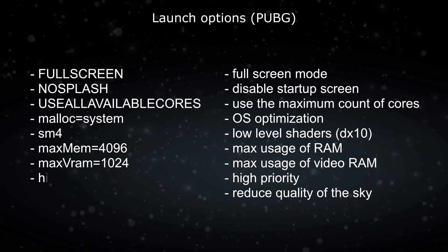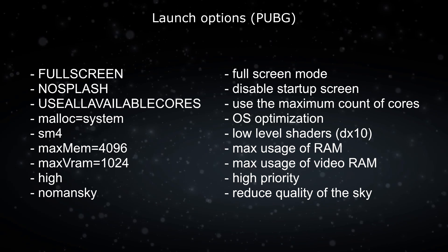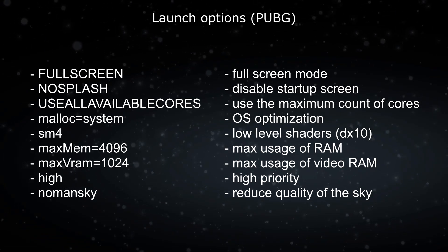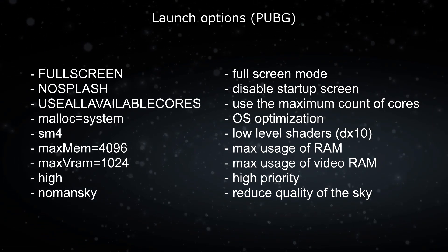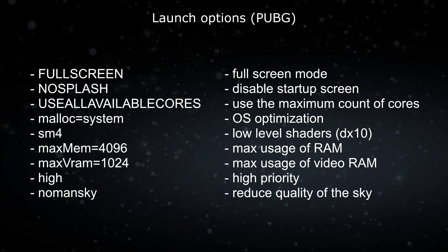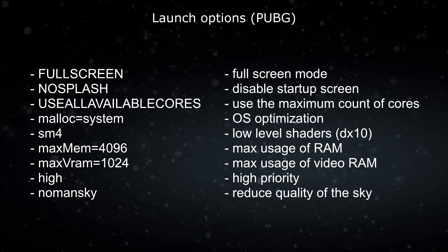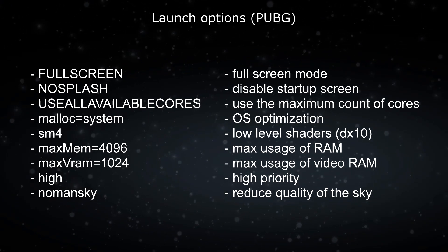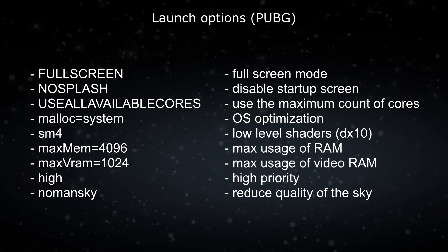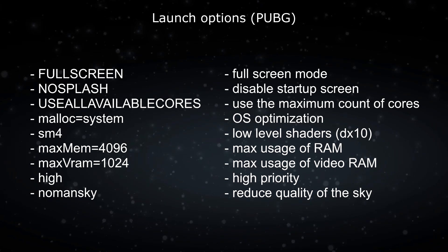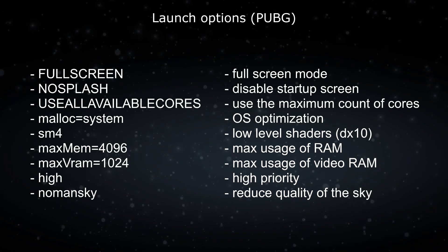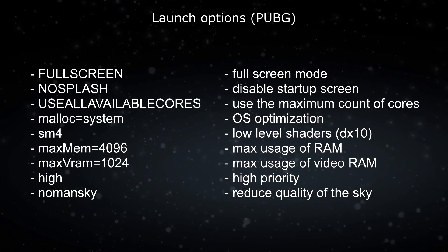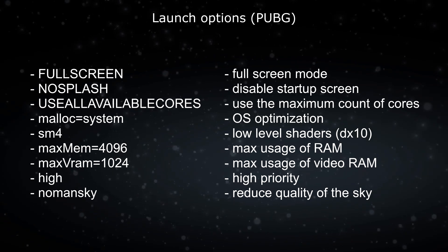Now consider the launch options for PlayerUnknown's Battlegrounds. -fullscreen runs the game in full screen mode. -nosplash disables the startup screen. -useallavailablecores starts the game using the maximum number of cores. -malloc=system runs the game using OS optimization. -sm4 runs the game using lower-level shaders.